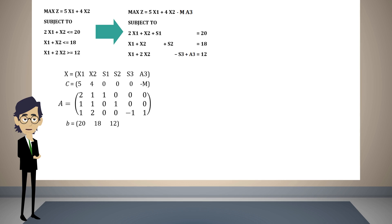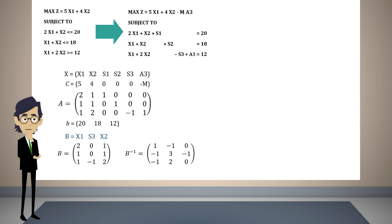The sensitivity analysis always starts considering the final solution of the problem. For this problem we had reached a solution formed by the basis X1, S3, and X2. With the columns of these variables in matrix A, we obtain matrix B and its inverse. We only need to add the vector of coefficients of the basic solution in the objective function, formed with the values of the coefficients of X1, S3, and X2 in the objective function, which are also found in vector C.